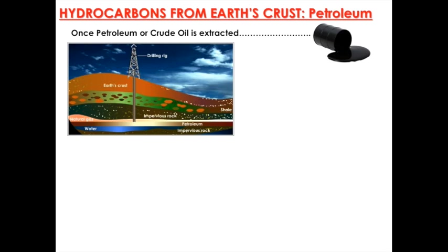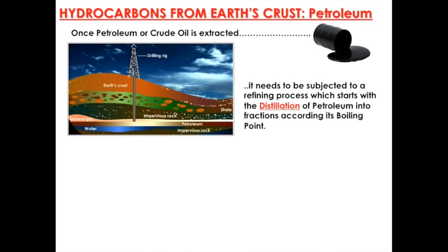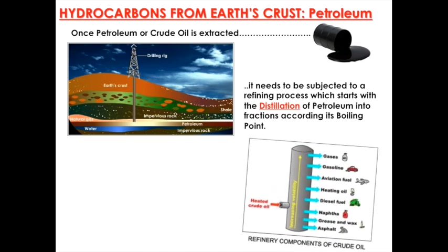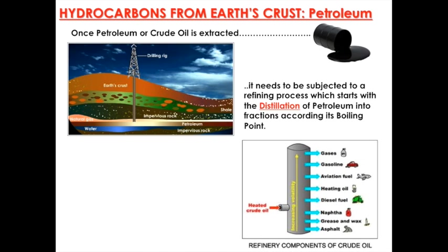Once petroleum or crude oil is extracted, it needs to be subjected to a refining process, which starts with distillation of petroleum into fractions according to its boiling points. Refining yields gases, gasoline, aviation fuel, heating oil, diesel fuel, naphtha, grease and wax, and asphalt.